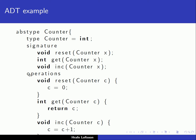On the operation side, which is really the implementation side, we have the implementation of the functions: reset just sets the counter to zero, get simply returns the counter, and increment just increments it by one.